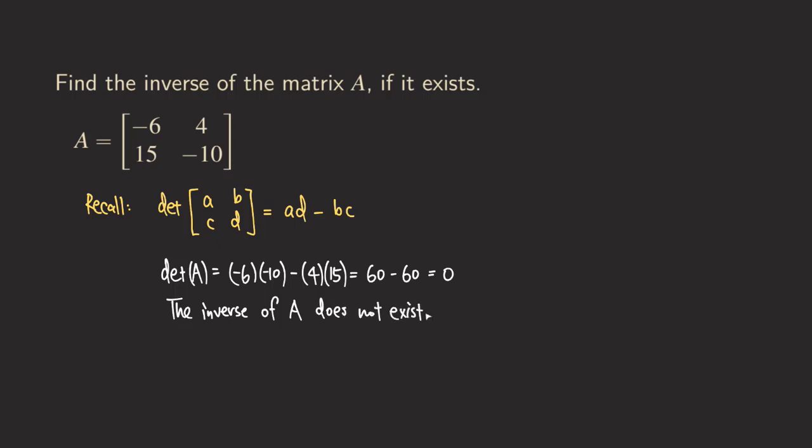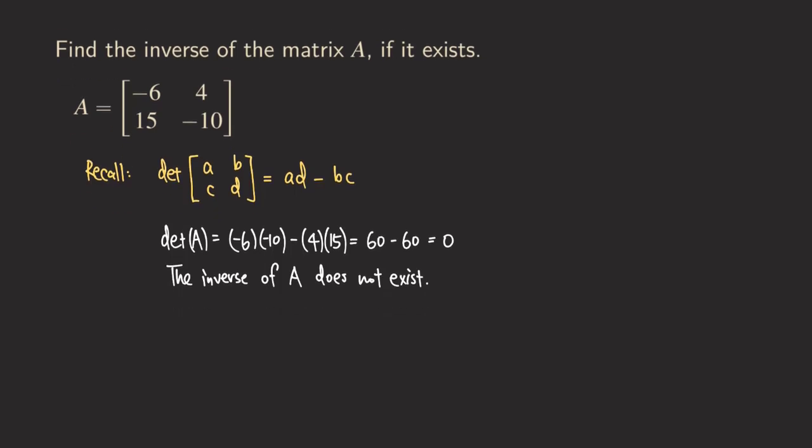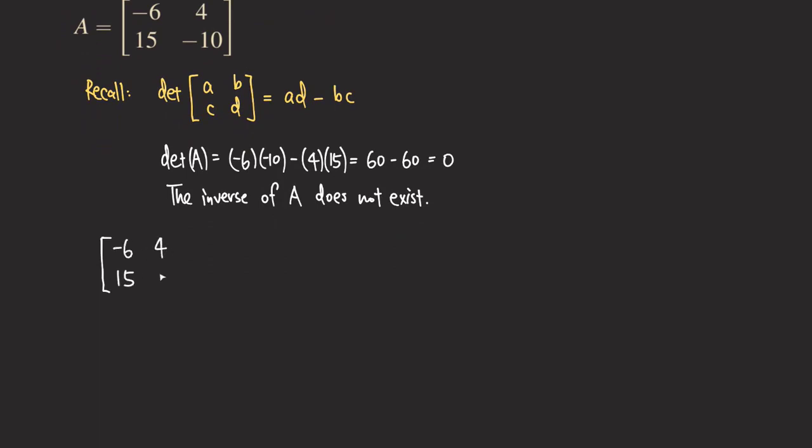Now I still want to try to do some row operations on this matrix and show you what actually happens when it comes to doing that process and see why we will not be able to obtain the identity matrix on the left side. So let's try to do the process of row operations by first joining the I on the right side of our matrix A.